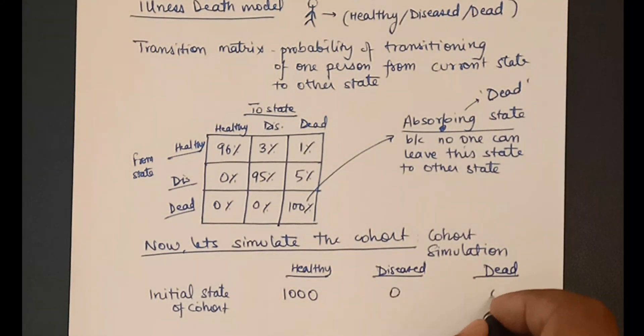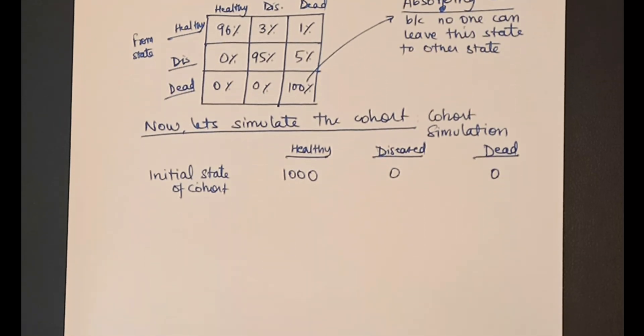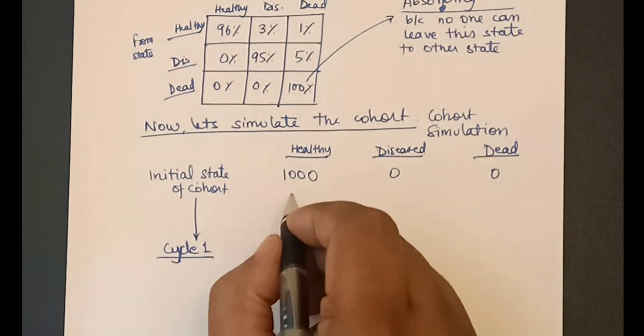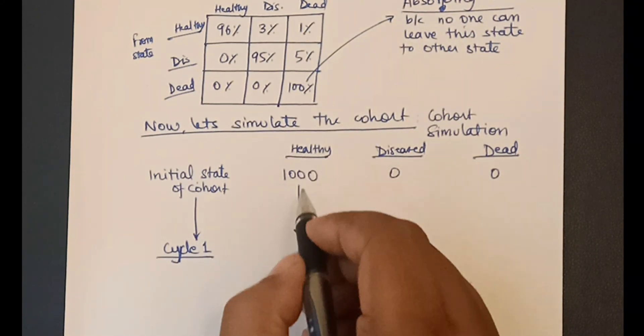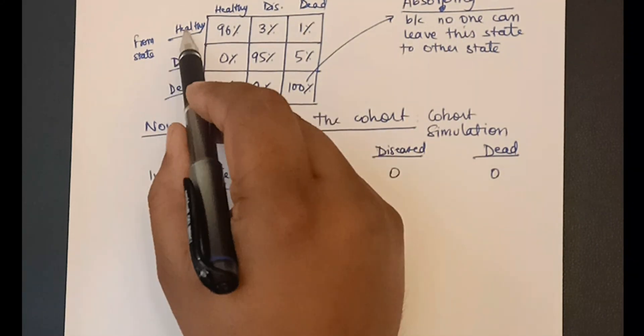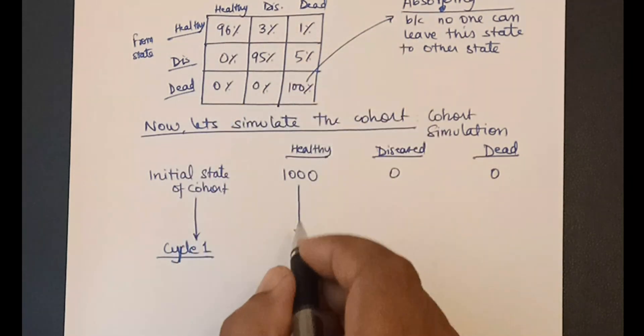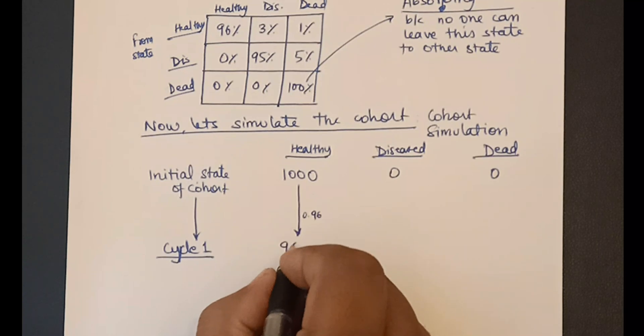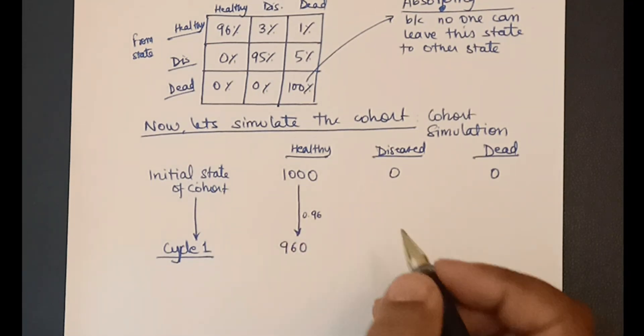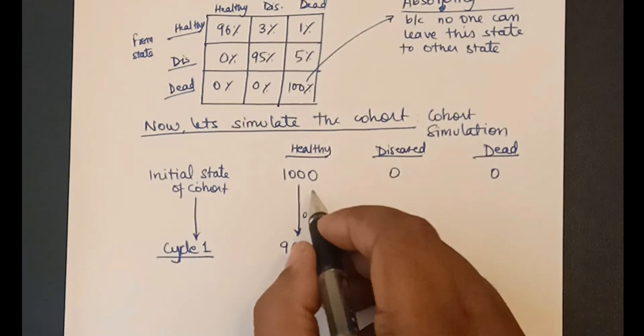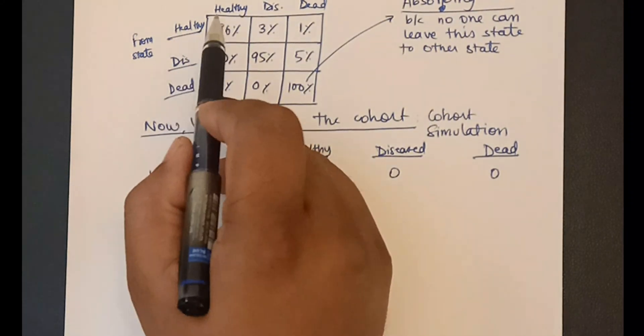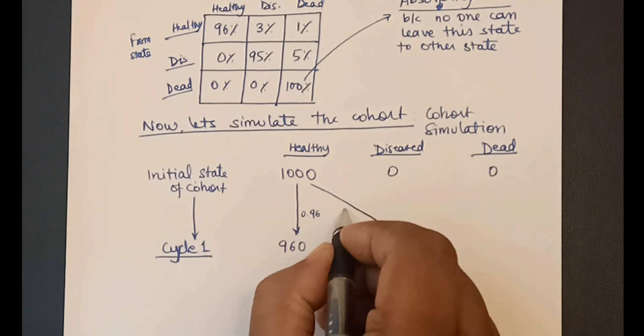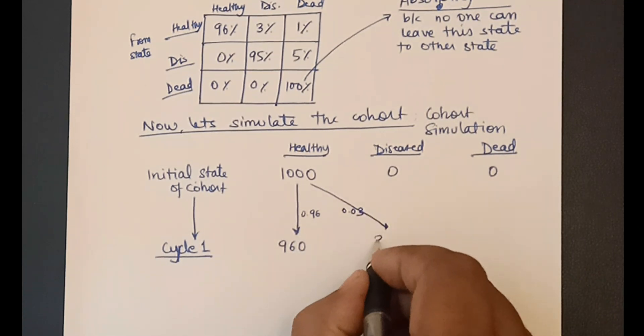After the end of cycle 1, how many people are remaining in each state? Let us calculate. We had 1000 healthy people initially and the probability of going from healthy to healthy is 96%. So we multiply 1000 by 0.96 which gives us 960 people. Similarly, the probability of going from healthy to diseased is 3%. So multiplying 1000 by 0.03 gives us 30.